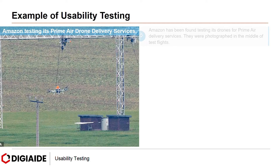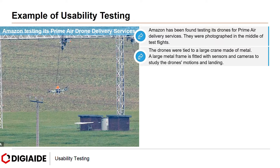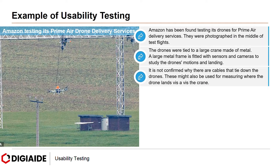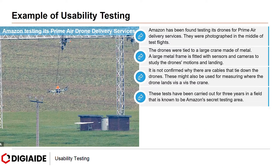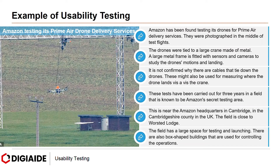The final example is Amazon testing its Prime Air drone delivery services. Amazon has been found testing its drones for Prime Air delivery services. They were photographed in the middle of test flights. These drones were tied to a large metal crane. A large metal frame fitted with sensors and cameras is used to study the drone's motions and landing. These cables may also be used for measuring where the drones land. These tests have been carried out for three years in a field known to be Amazon's secret testing area, near Amazon's headquarters in Cambridge, UK, close to the Worsted Lodge. Amazon is assured it will make the process glitch-free before launching the service to the public.